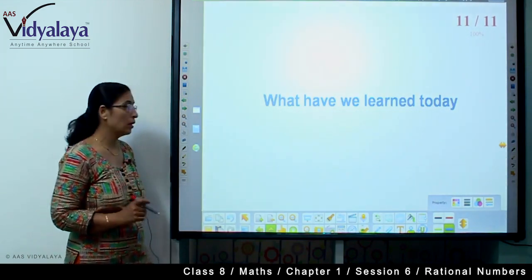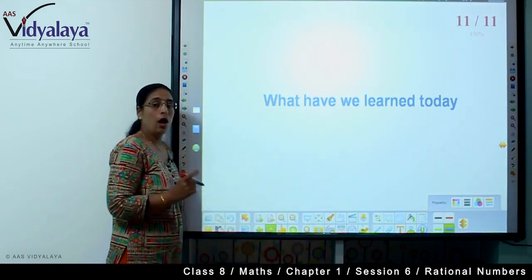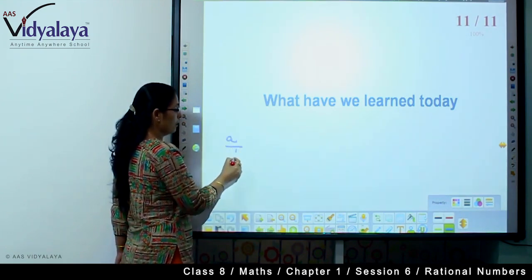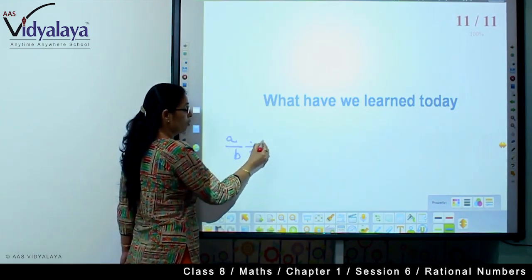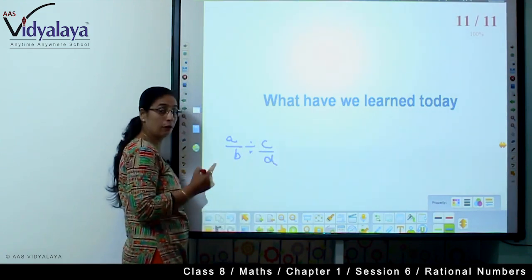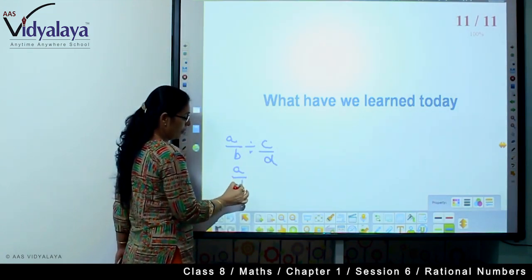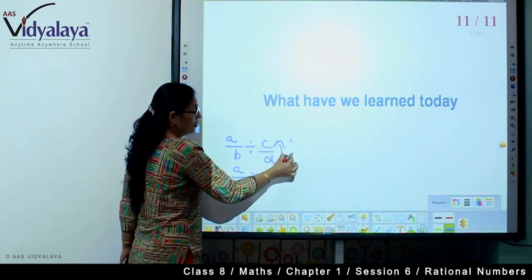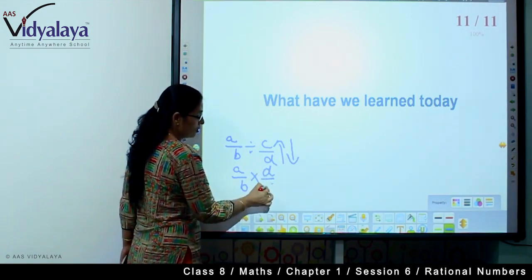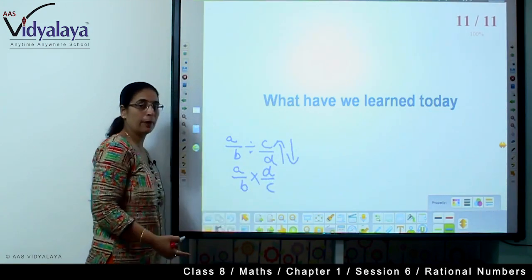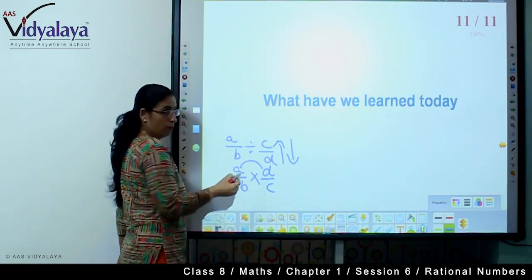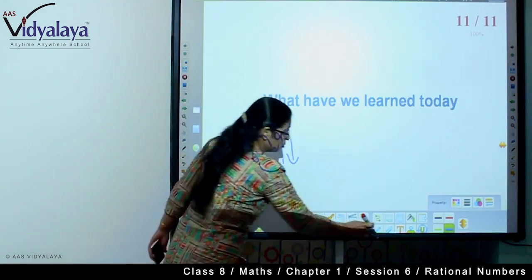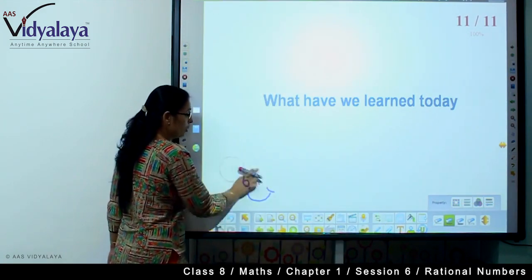For any three rational numbers like A, B, C, A divided by bracket B divided by C is unequal to A divided by B divided by C. Today you learned that addition and multiplication can be done in association, but not with subtraction and division. How do we multiply and how do we divide? Division place we put multiply sign and reciprocate the values. Numerator times numerator gets multiplied and denominator times denominator gets multiplied.